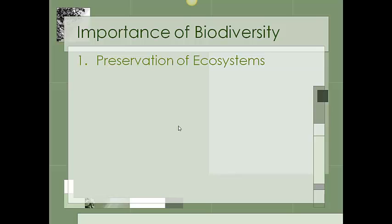By ecosystems, we mean things like the deciduous forest ecosystem, the tropical rainforest ecosystem, or a desert ecosystem. An ecosystem can't exist without different types of organisms because they all depend on each other in different food webs, food chains, and recycling of nutrients. So if we want to keep these ecosystems intact — for example, the ecosystem on the north shore of Minnesota on the coast of Lake Superior — we need to keep the plants and animals in that area alive and thriving. Otherwise, if we don't maintain the biodiversity of the different types of plants and animals there, the ecosystem will fall apart.